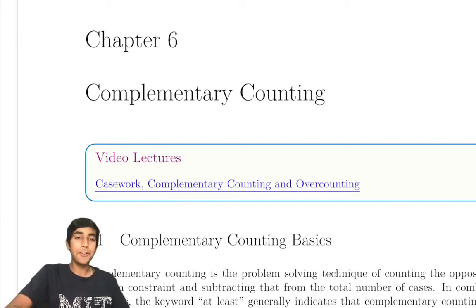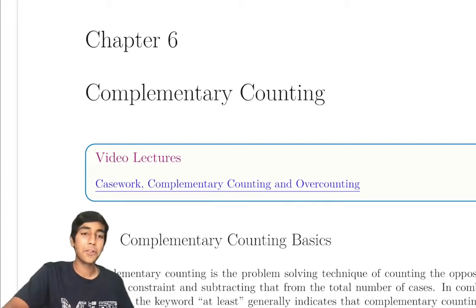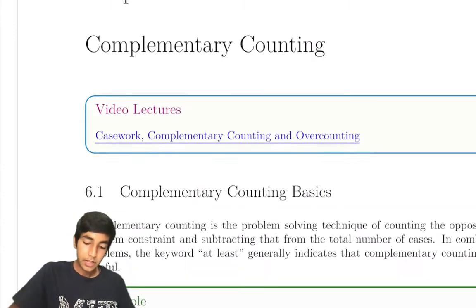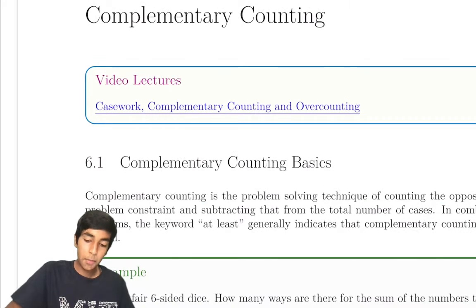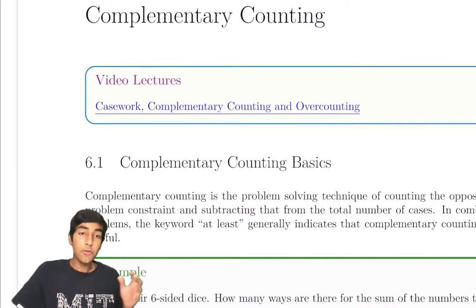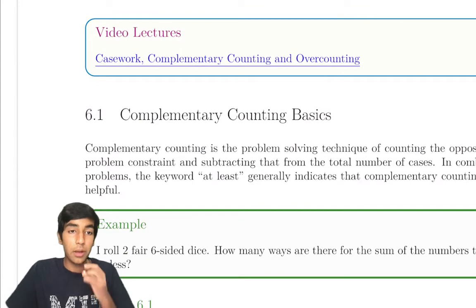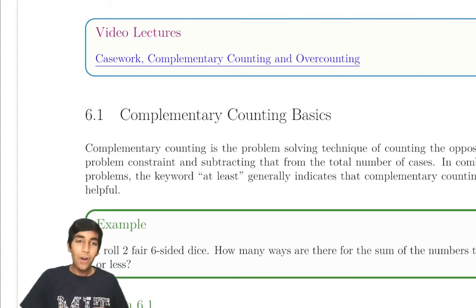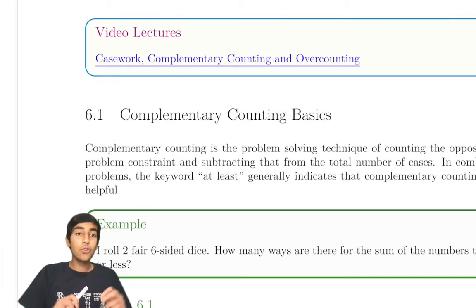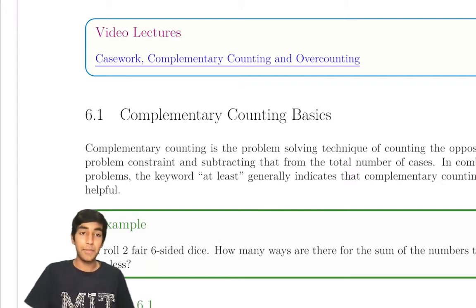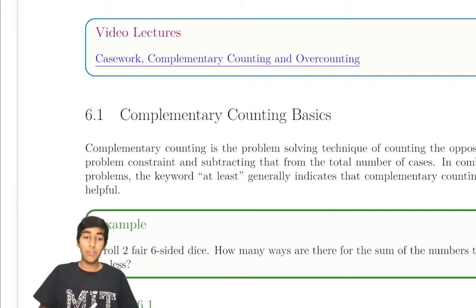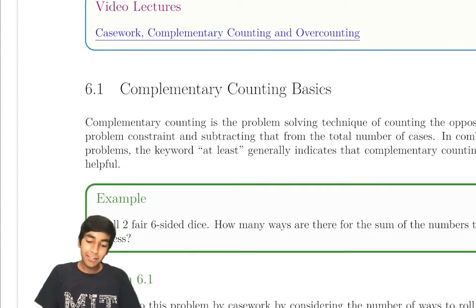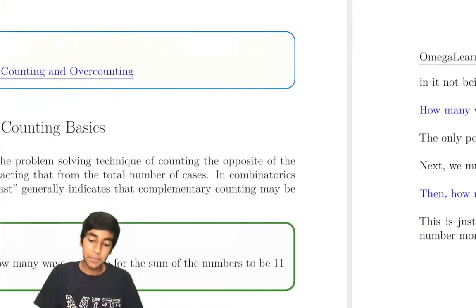What is complementary counting? Complementary counting is a combinatorics technique where you subtract the cases you don't want from the total number of cases. It can actually be used to trivialize some seemingly difficult problems and it's extremely powerful. Let's explore how it can be used.